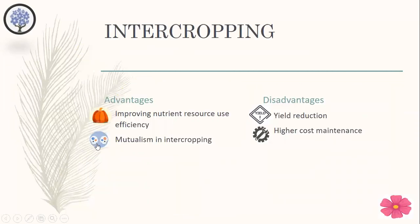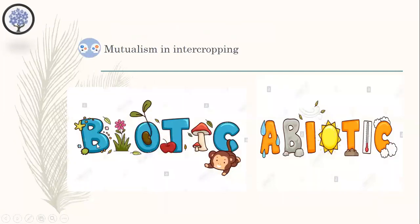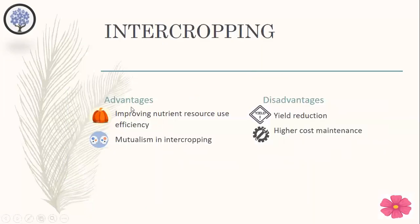The second advantage is mutualism in intercropping. The beneficial interaction between crop species and mutualists allows improvement of yield and reduction of both biotic and abiotic above and below ground stresses, and it holds potential to ensure a productive and stable agroecosystem. For these two advantages of intercropping, the information was obtained from an article by China Agricultural University.